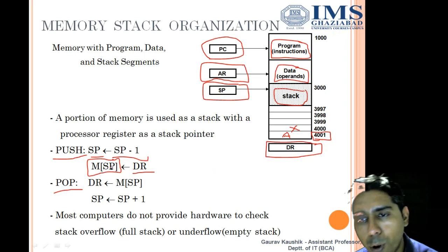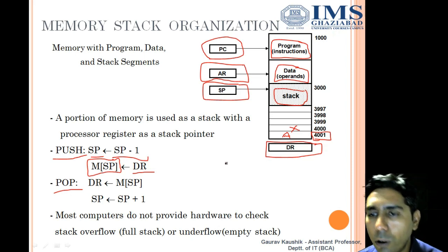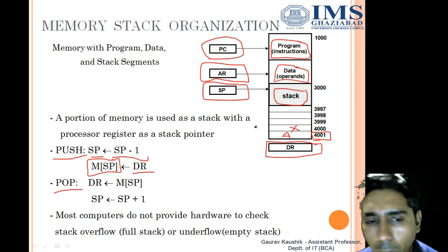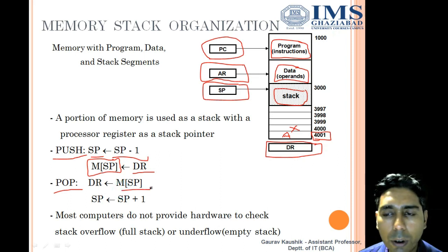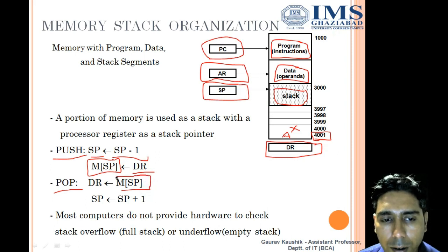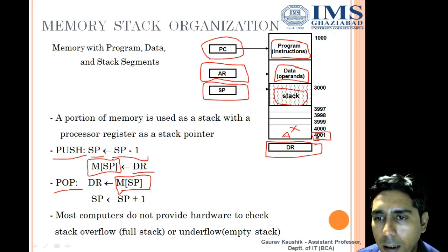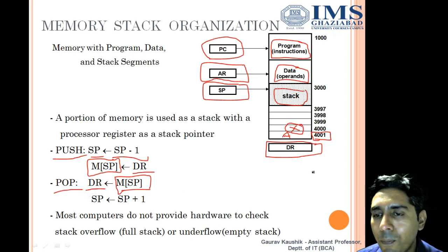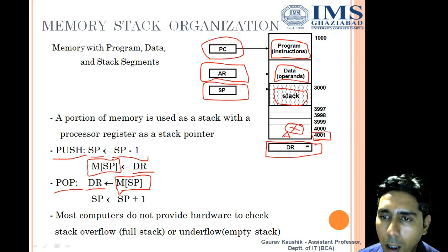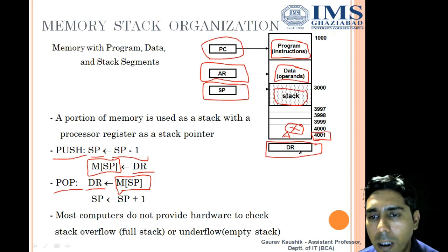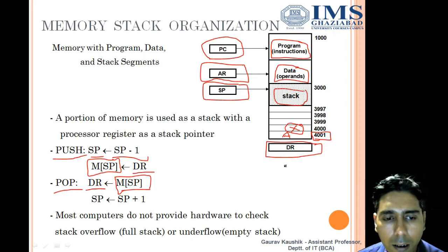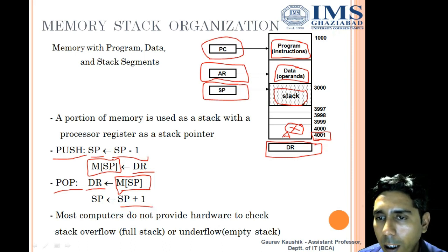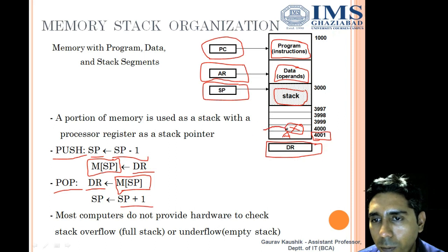For the pop operation, the SP, which holds the top of the stack, provides the address. From that memory address, the element is copied into DR, the data register — that element is read out from the RAM and provided to DR. After the read, the stack pointer is incremented by one.